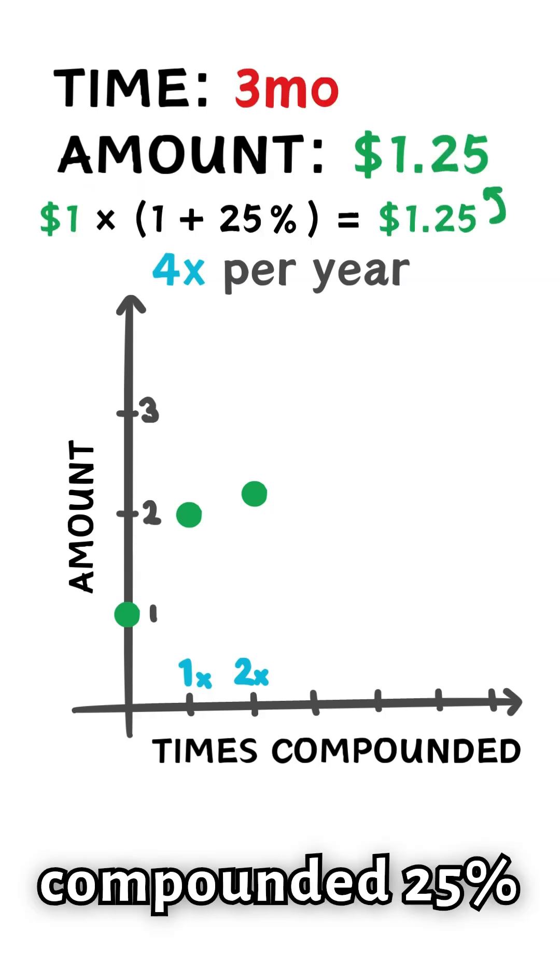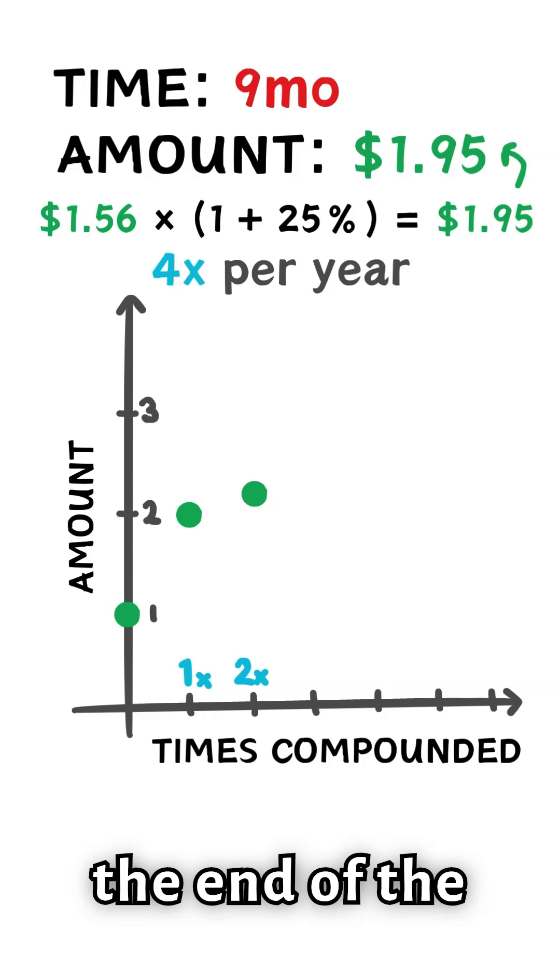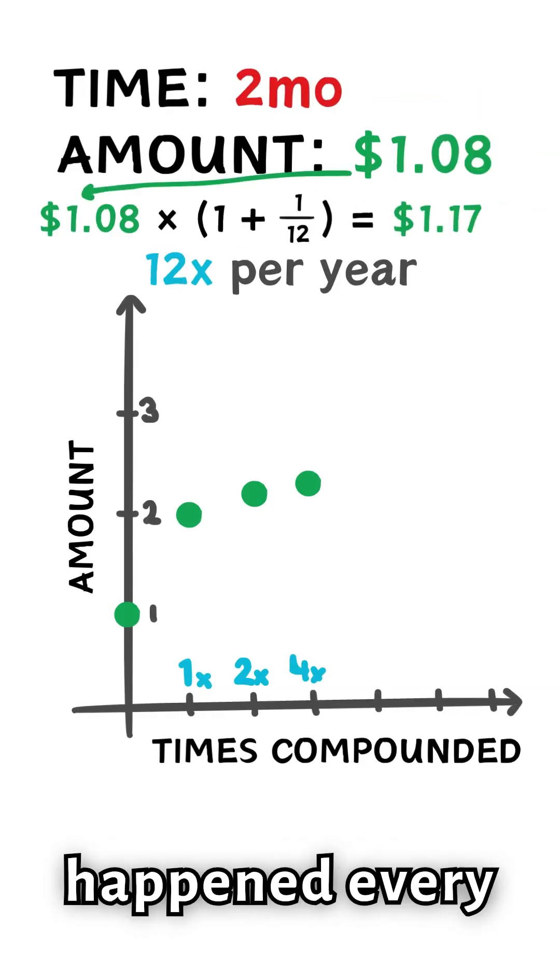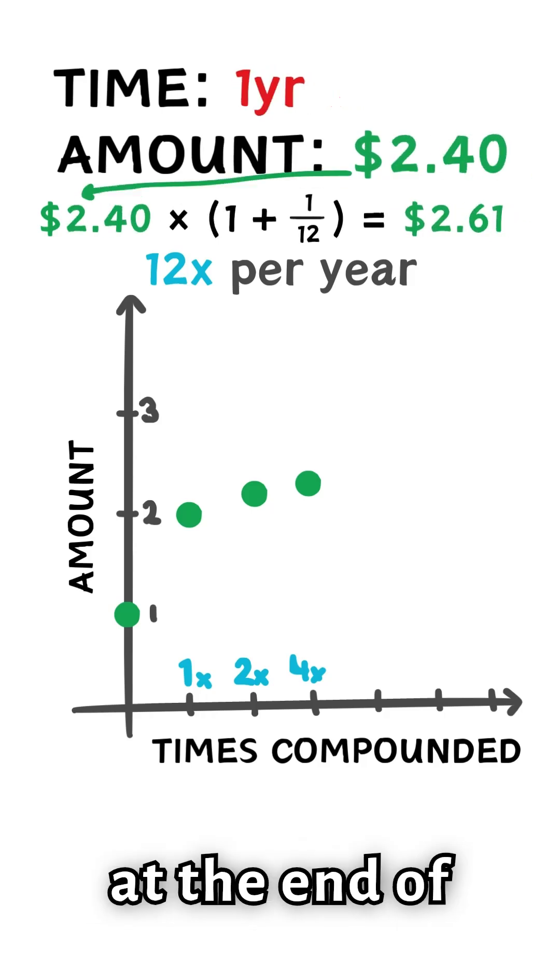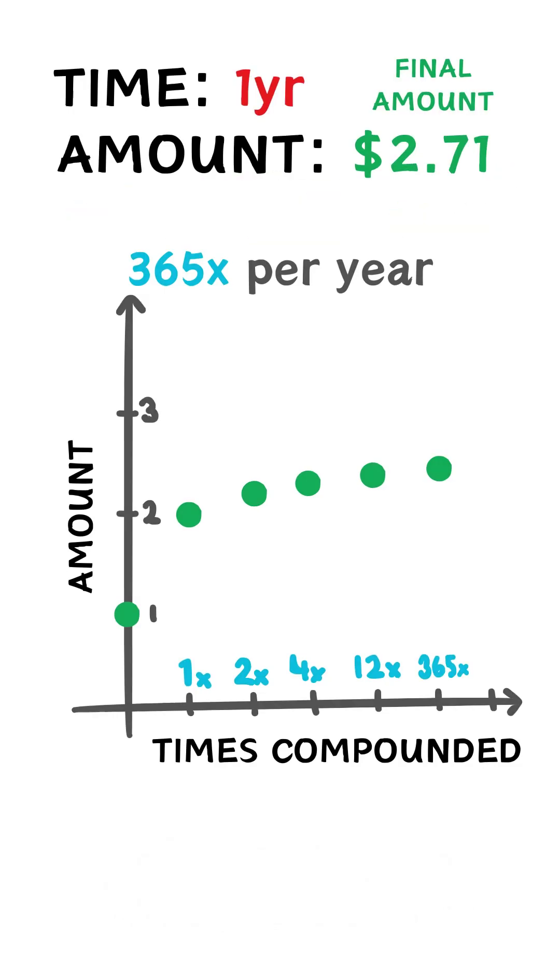If the amount was compounded 25% every 3 months, or a quarter of a year, at the end of the year it would total $2.44. If the compounding happened every month, or a twelfth of a year, there would be $2.61 at the end of that year. And if it was compounded daily, there would be $2.71.